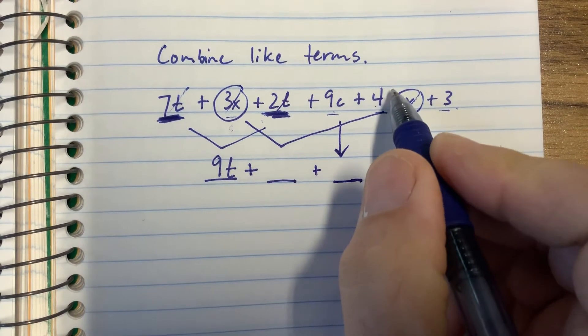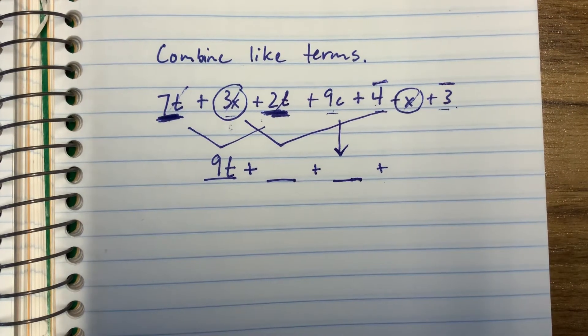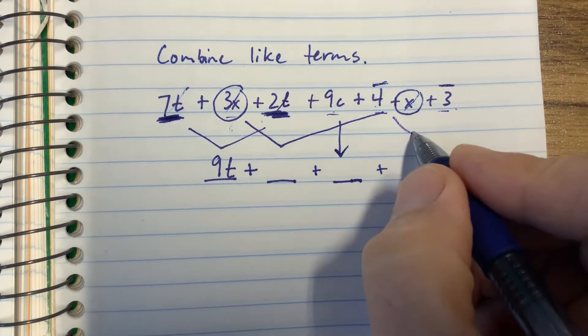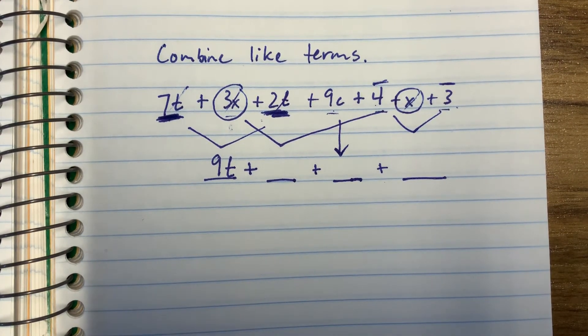And then add. We have a 4 and a 3 left. A 4 and a 3. Those are like terms because they don't have a variable. Put those together and you will have combined the like terms. Good job. See you on the next one.